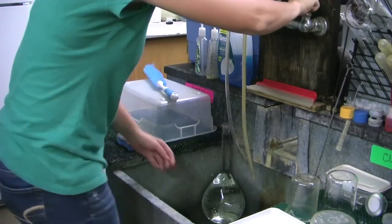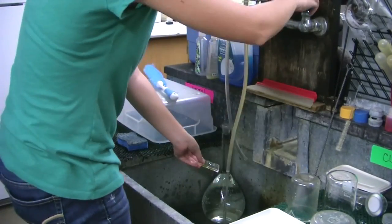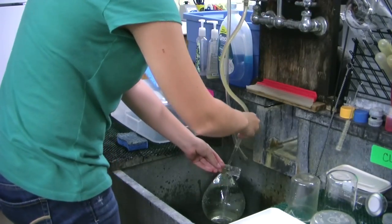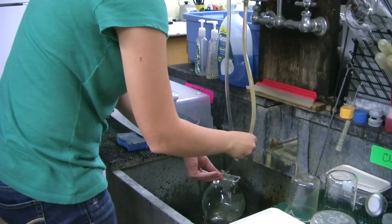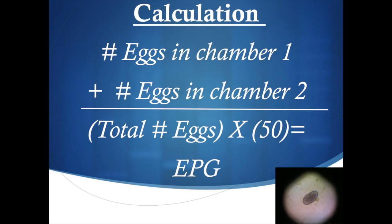Once you are finished with the McMaster slide, place it in water with soap to be cleaned. Let it soak or gently run water through the slide. Throw away feces and wash all other reusable equipment. Now, to determine the eggs per gram, or EPG, of the sample used in the demonstrated procedure, add the total number of eggs from both chambers and then multiply by 50. It is important to note that the factor of 50 is used when a 2-gram sample is analyzed. The factor is different when a different weight of feces is used.